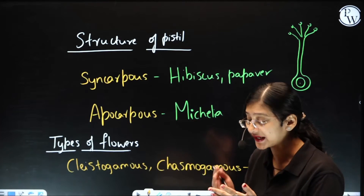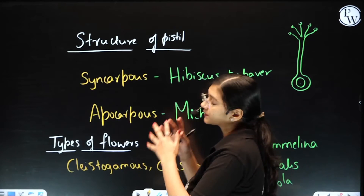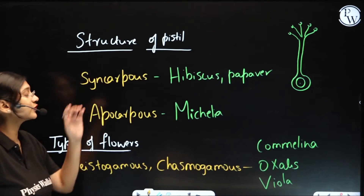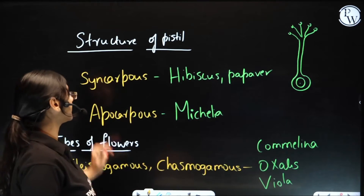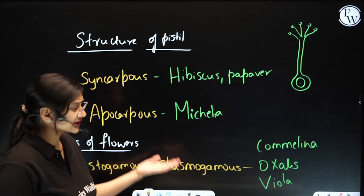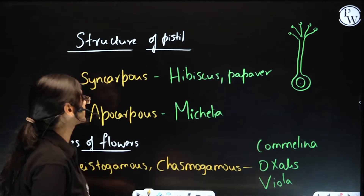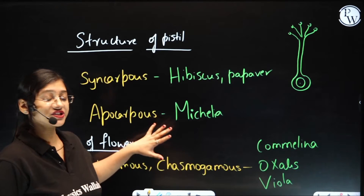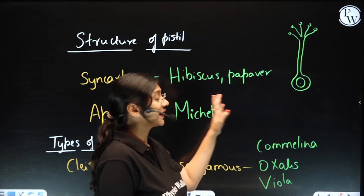There are two types of structure of pistil that we get to see — that is syncarpous and apocarpous. Syncarpous means the carpels are fused. Carpus means carpel, that is the female reproductive structure, which can also be called as pistil. So syncarpous, which means the carpels are fused — such a condition we get to see in Papaver and Hibiscus.